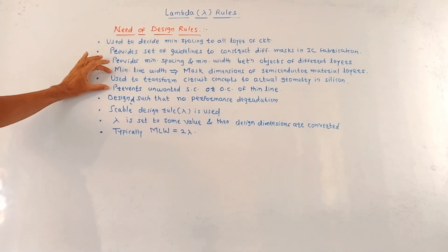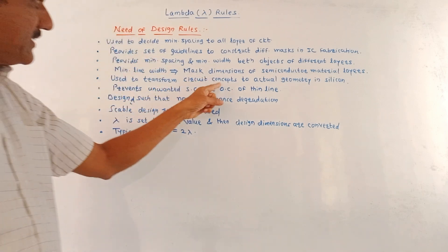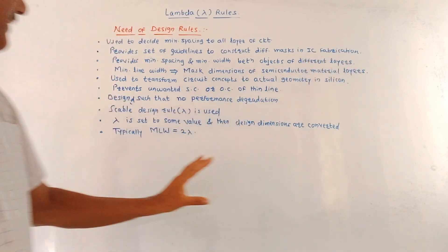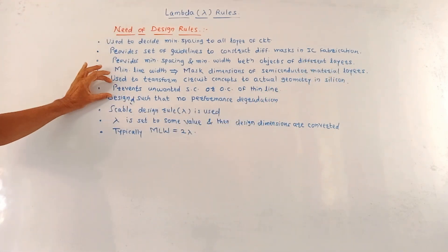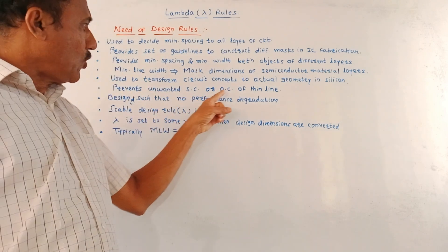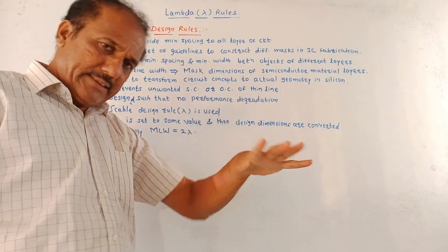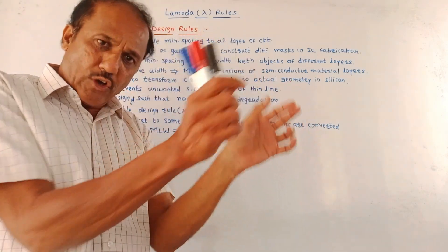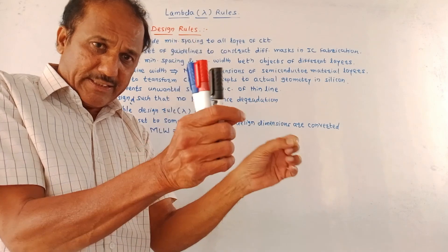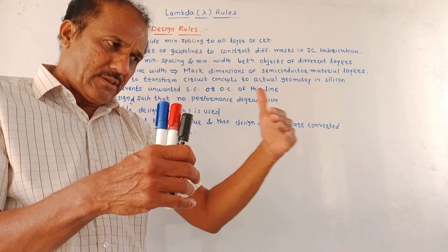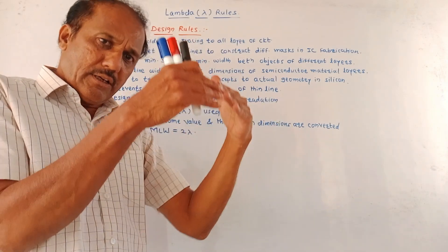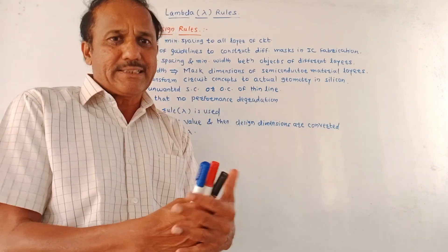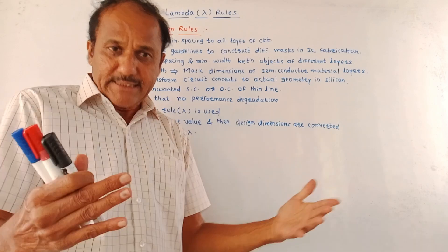These rules are used to transform the circuit concepts to the actual geometry in the silicon material. They prevent unwanted short circuit or open circuit of the thin line. If there is a thin line between two layers used to join them and it is very thin, it may become an open circuit after a particular distance, causing an unwanted open circuit in the design.